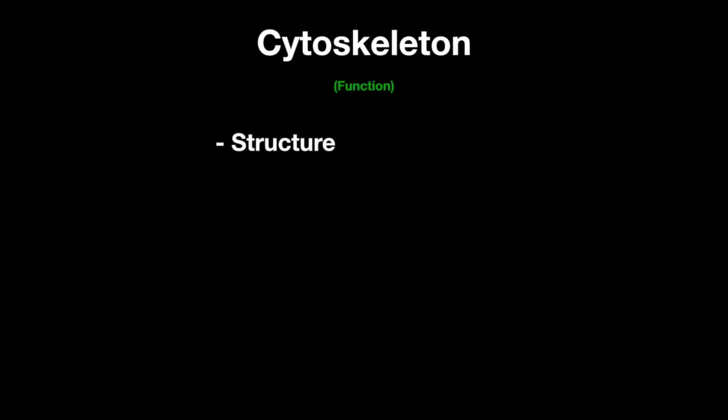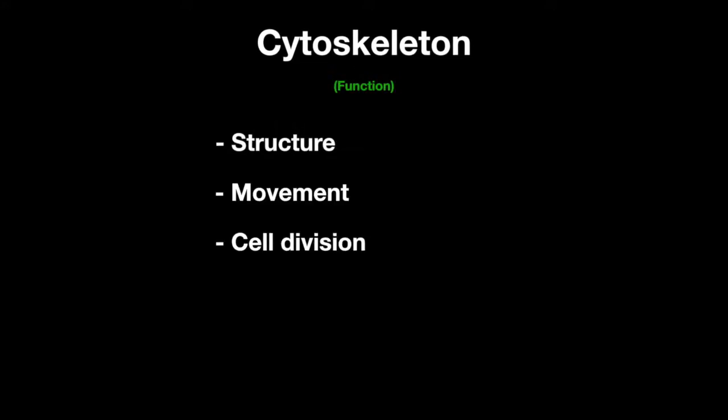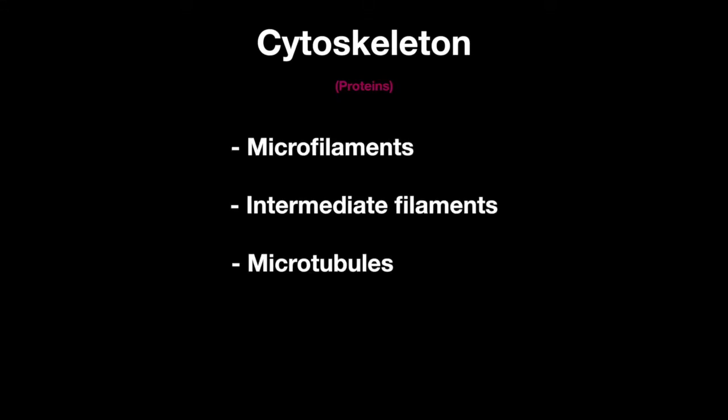The cytoskeleton is a collection of proteins that gives the cell its structure and allows for movement and cell division. The proteins of cytoskeleton are microfilaments, intermediate filaments, and microtubules.